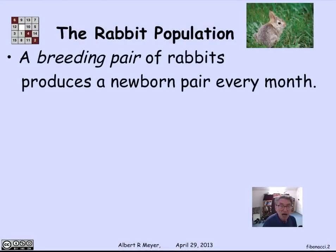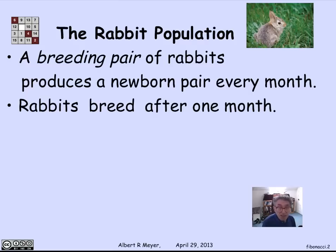Here's the story. Let's imagine that we have a breeding pair of rabbits, and they have the property that once they're old enough to be breeding, they produce a newborn pair of rabbits every month. We're going to count rabbits in pairs just for simplicity. So a breeding pair produces a newborn pair every single month. In addition, it takes one month for a newborn pair to mature into a breeding pair. So rabbits can start breeding after they've lived for one month.